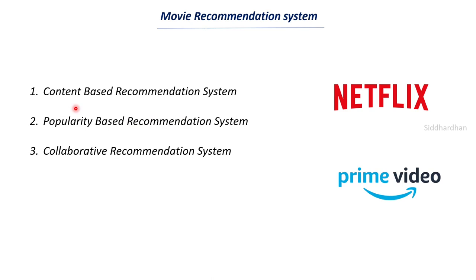The content-based system recommends movies to a user based on the content of films they have watched before. For example, if a person is watching multiple superhero movies, this system will recommend more superhero movies. If someone watches space-related movies, it will recommend space-related movies. This system is completely based on the content, story, and theme of the movie.